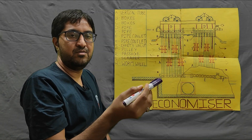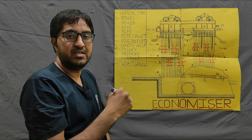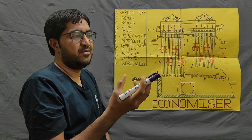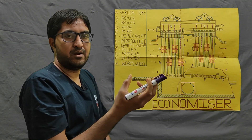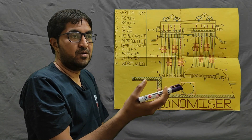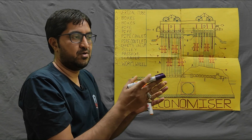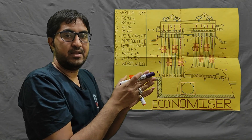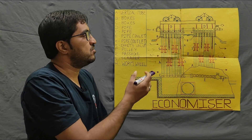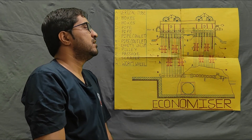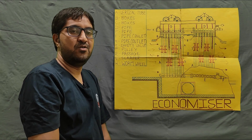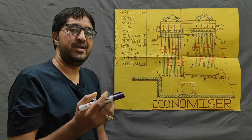This is the working principle of the economizer. Finally, we increase the temperature of the water, and this hot water is supplied to the boiler, increasing the thermal efficiency. For example, water taken directly from a river has a lower temperature than the water received from the economizer. So the economizer increases the efficiency of the thermal power plant. Thank you for watching this video; I hope this content is helpful to you.